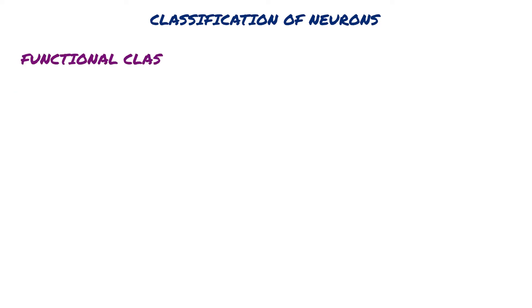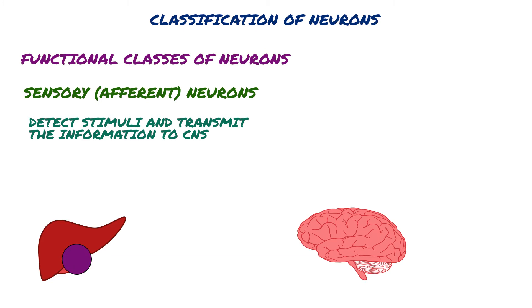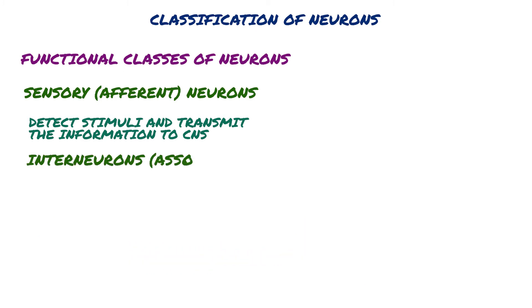Functional classes of neurons: Sensory (afferent) neurons are specialized to detect stimuli and transmit information to the CNS. They begin in any organ in the body but end in the brain or spinal cord.